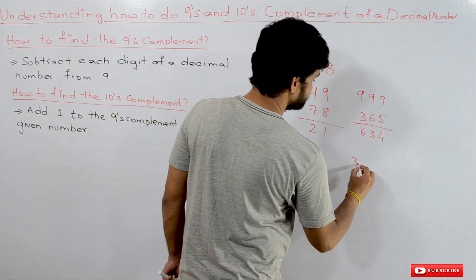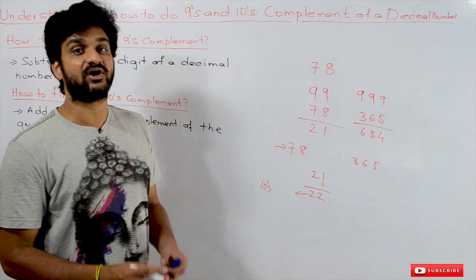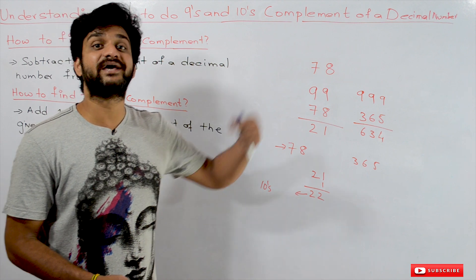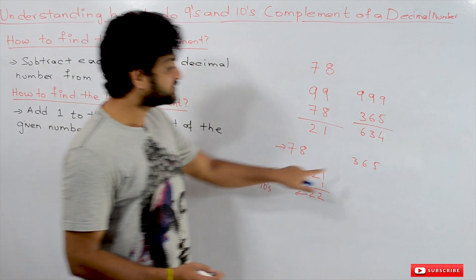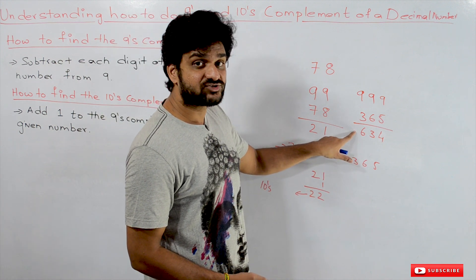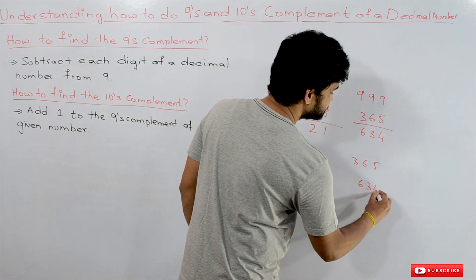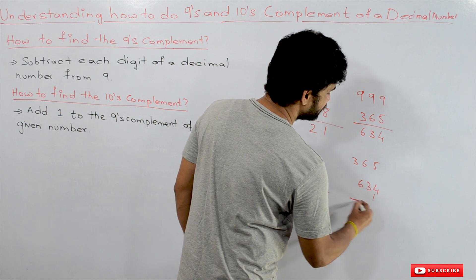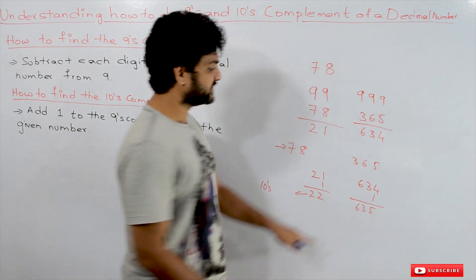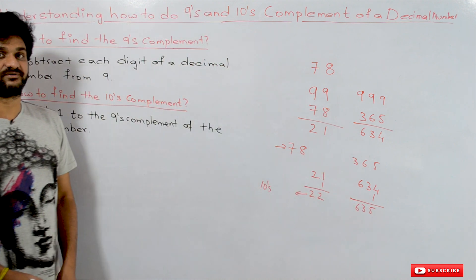How to find the 10th complement of 365? Add 1 to the 9th complement of the given number. The 9th complement of 365 is 634. Add 1 to 634 — we get 635. So the 10th complement of 365 is 635.